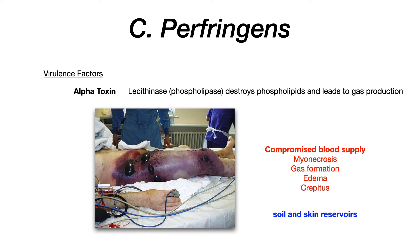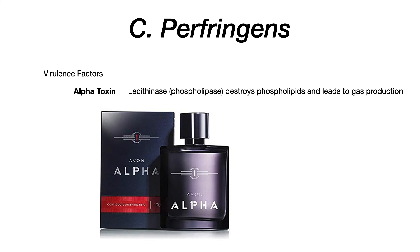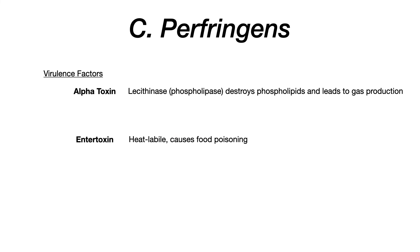My mnemonic to remember this: think of perfume for perfringens — specifically alpha perfume — which reminds you that perfringens is associated with the alpha toxin. There is another virulence factor, not as high-yield: a heat-labile enterotoxin, which causes food poisoning. But because food poisoning is so highly associated with other bacteria, this doesn't show up a lot on exams. If they give you Clostridium perfringens, they're going after the alpha toxin and myonecrosis.